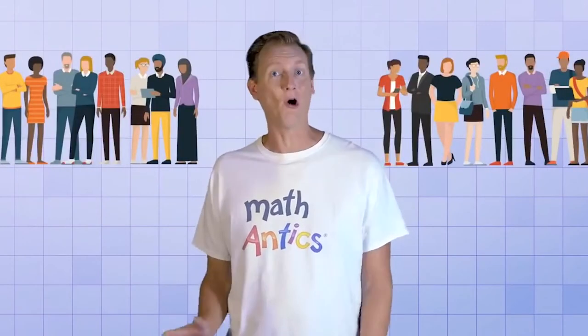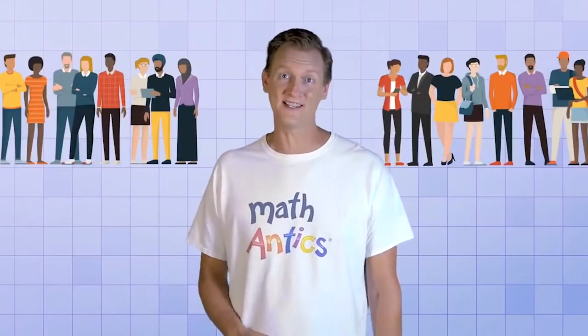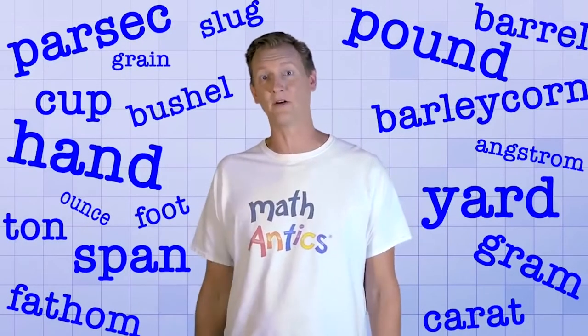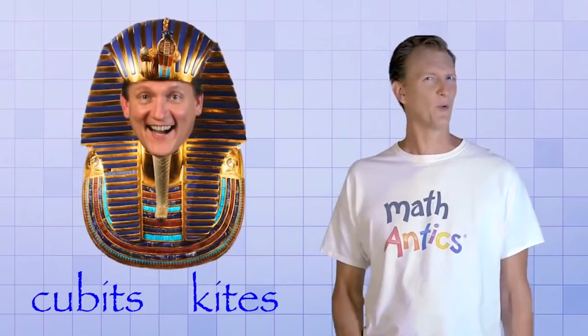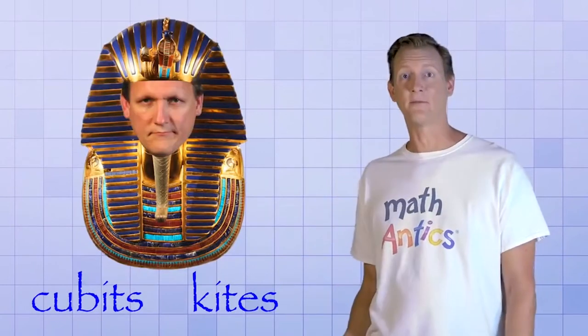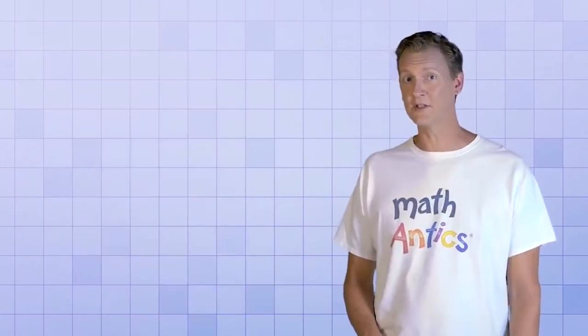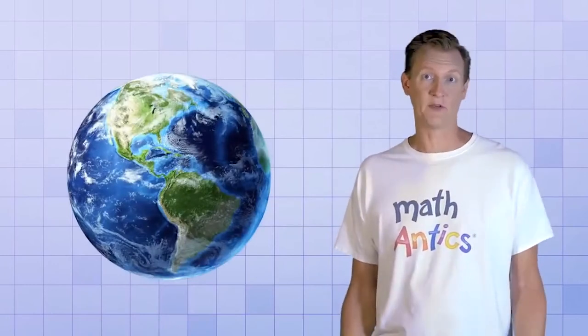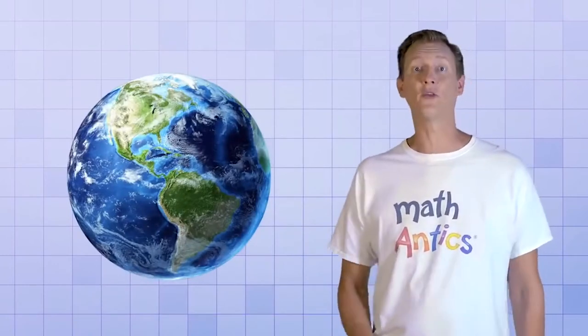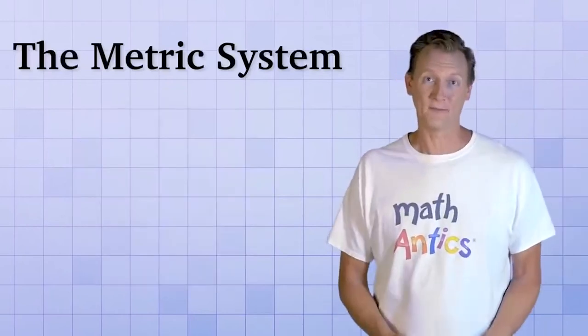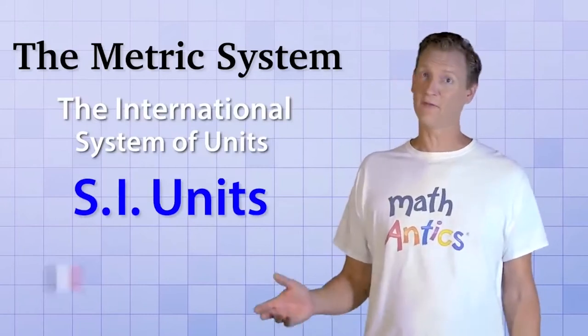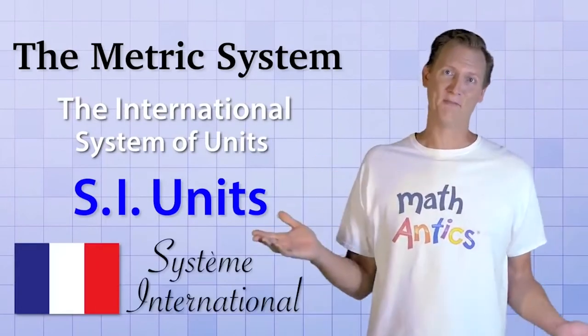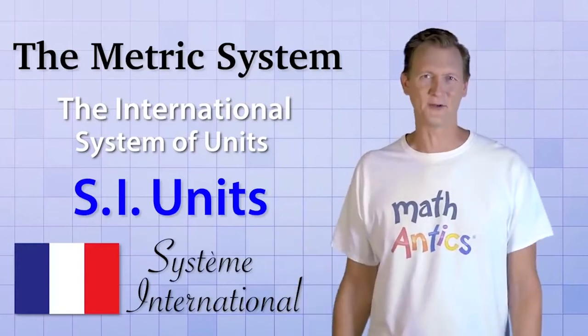Getting a bunch of different people to all agree to use the same standards is not always an easy task. Throughout history, a variety of different units have come in and out of popularity. In modern times, there are still a lot of different units used in different countries, but the most popular system of units used around the world is called the metric system. Its official name is the International System of Units, or SI Units for short, which stands for the French Système Internationale.